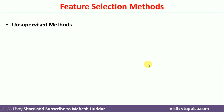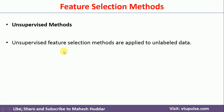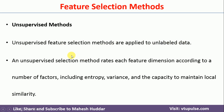In unsupervised feature selection, these methods are applied to unlabeled data. Given a set of features, we try to assign a rate or weight to each feature using measures like entropy, variance, or capacity to maintain local similarity. The feature with the higher weight is selected and the remaining features are removed from the feature set.